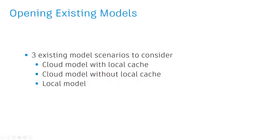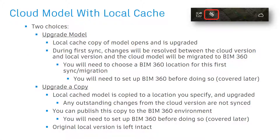We're going to look at three different scenarios of existing models you may need to open. First, cloud models that are in the cloud and also have a local copy, or cache. Second, cloud models that have no local cache, meaning they live only in the cloud. And finally, local models which are strictly local and have never been in the cloud.